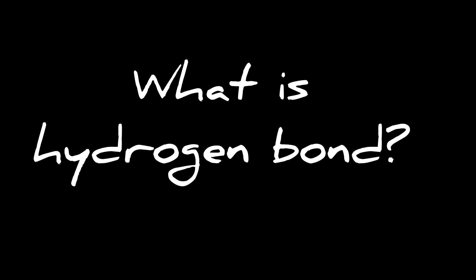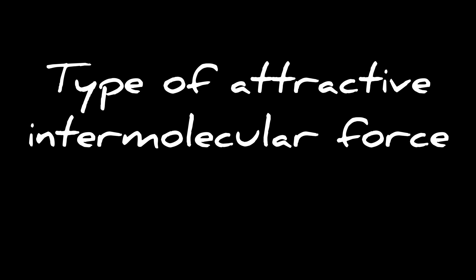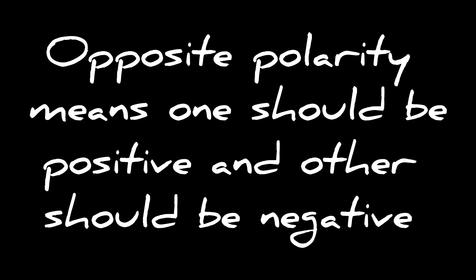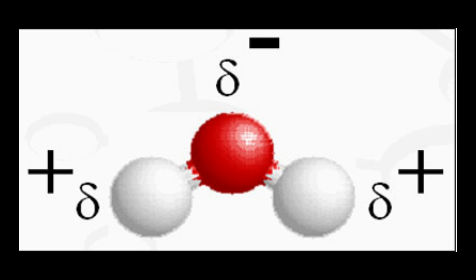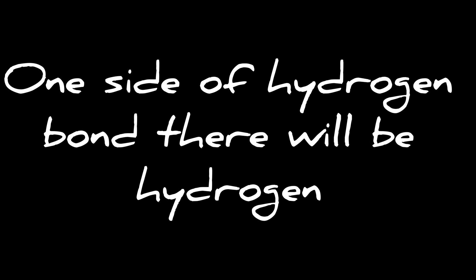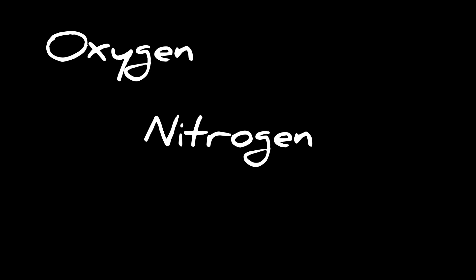What is a hydrogen bond? A hydrogen bond is a type of attractive intermolecular force existing between two partial electric charges of opposite polarity — one should be positive and the other negative. Comparing the strength: a hydrogen bond is weaker than a covalent bond and an ionic bond. As the name implies, one side of a hydrogen bond has hydrogen, and the other side has an electronegative atom like oxygen, nitrogen, or fluorine. Basically, hydrogen bonding is responsible for all the peculiar behavior of ice.